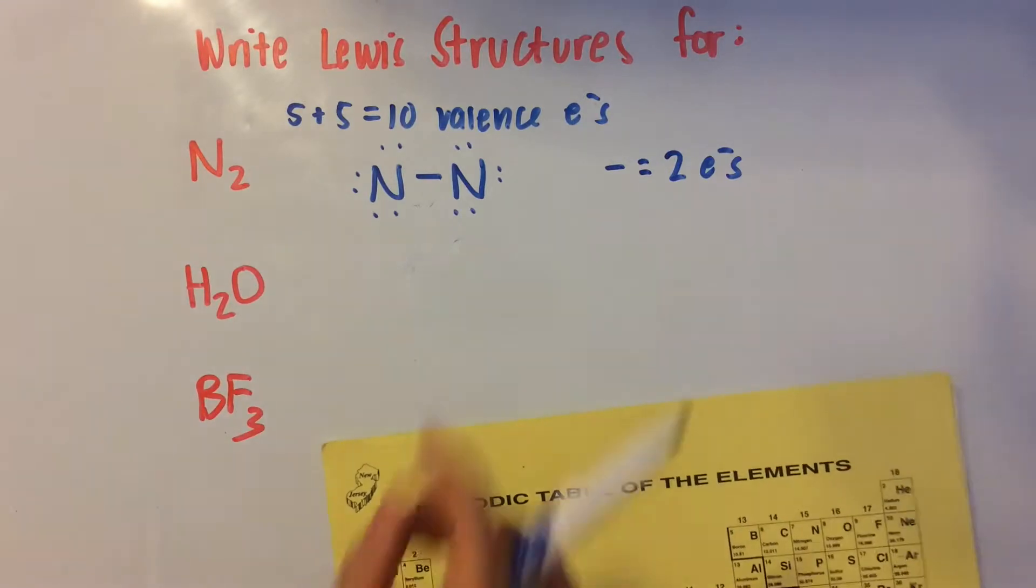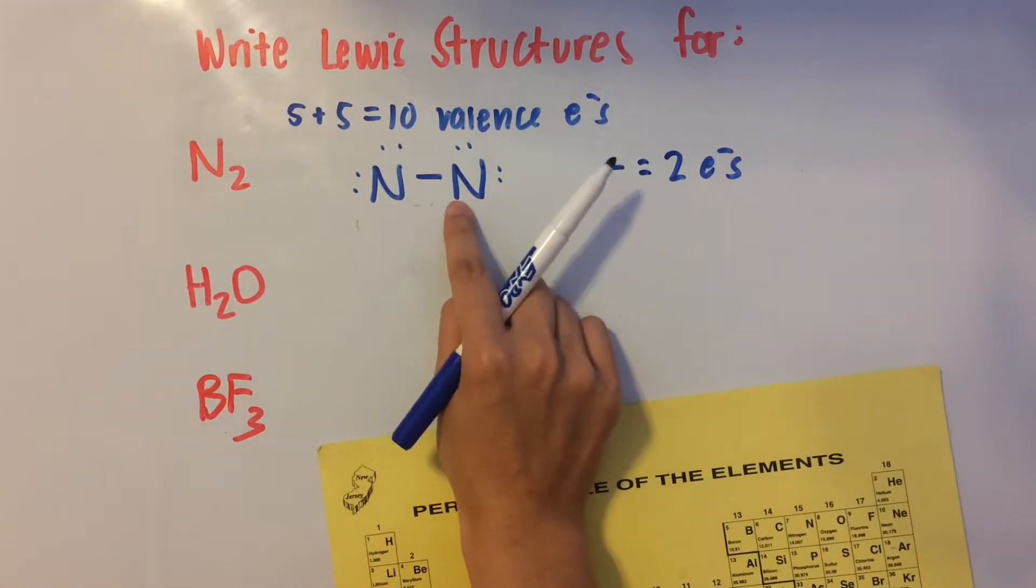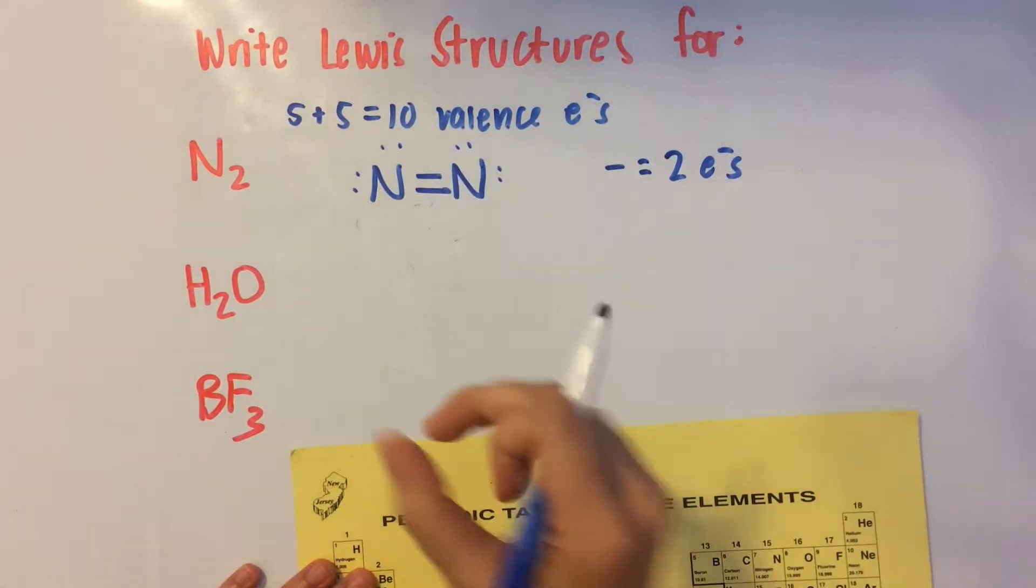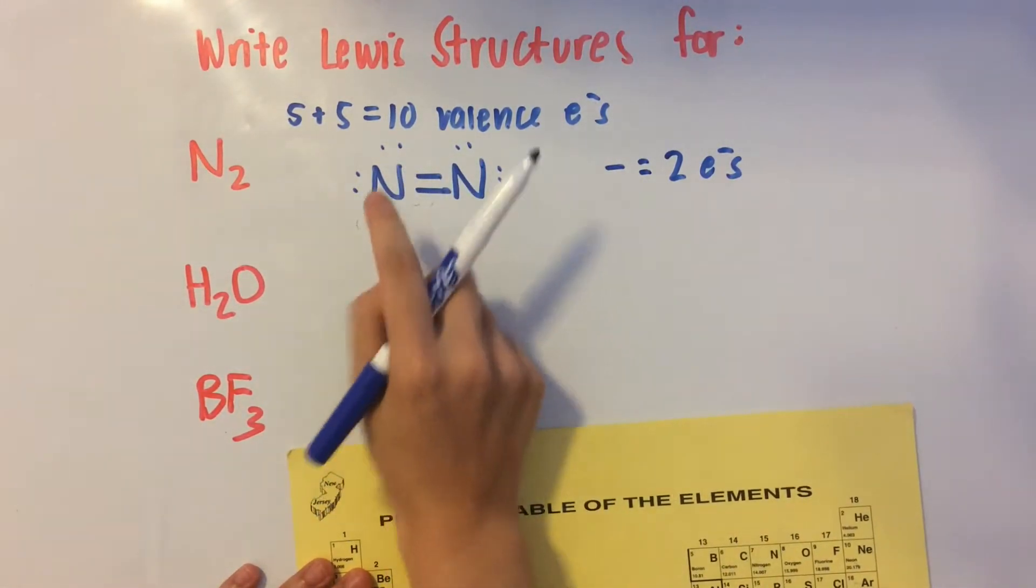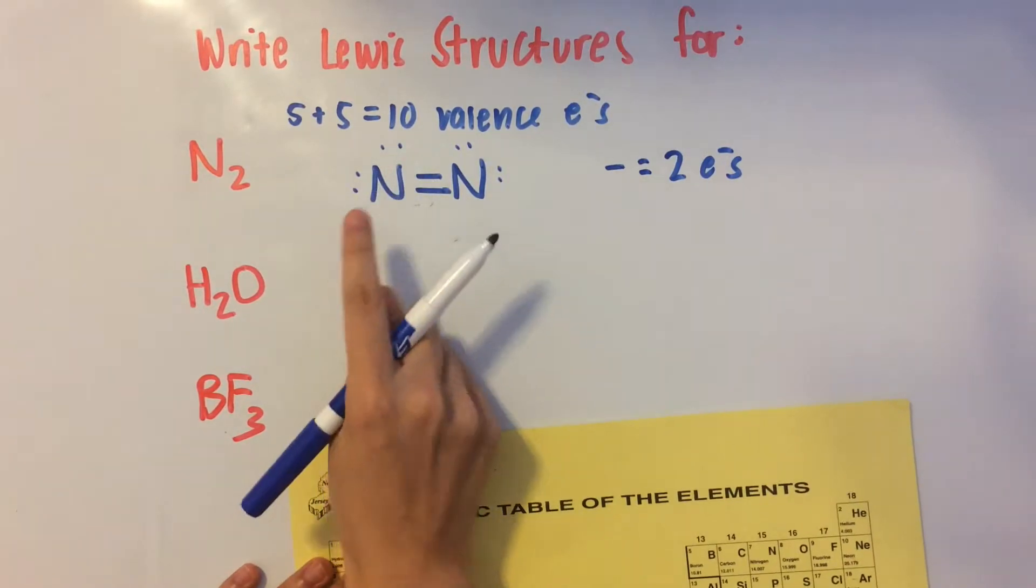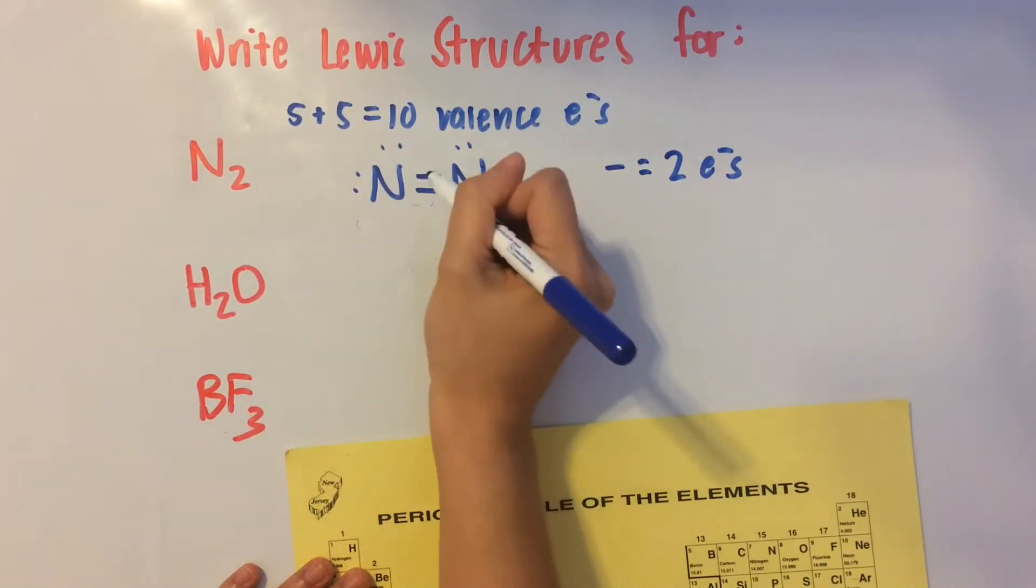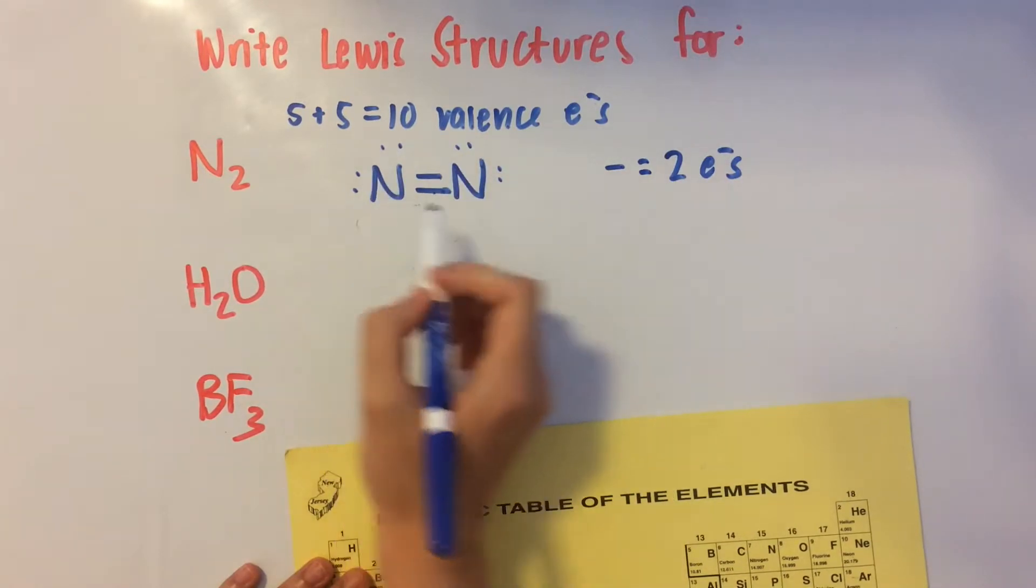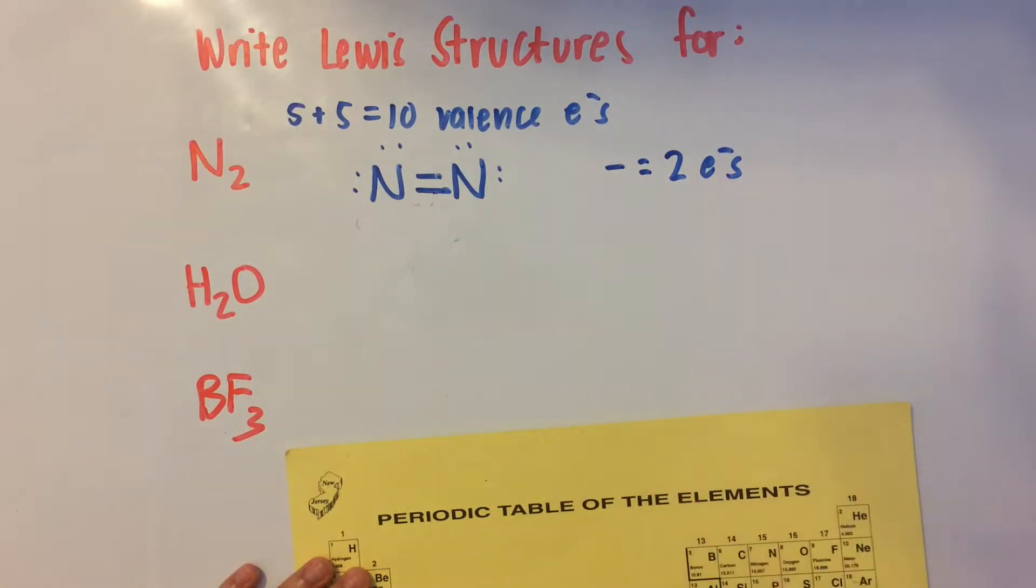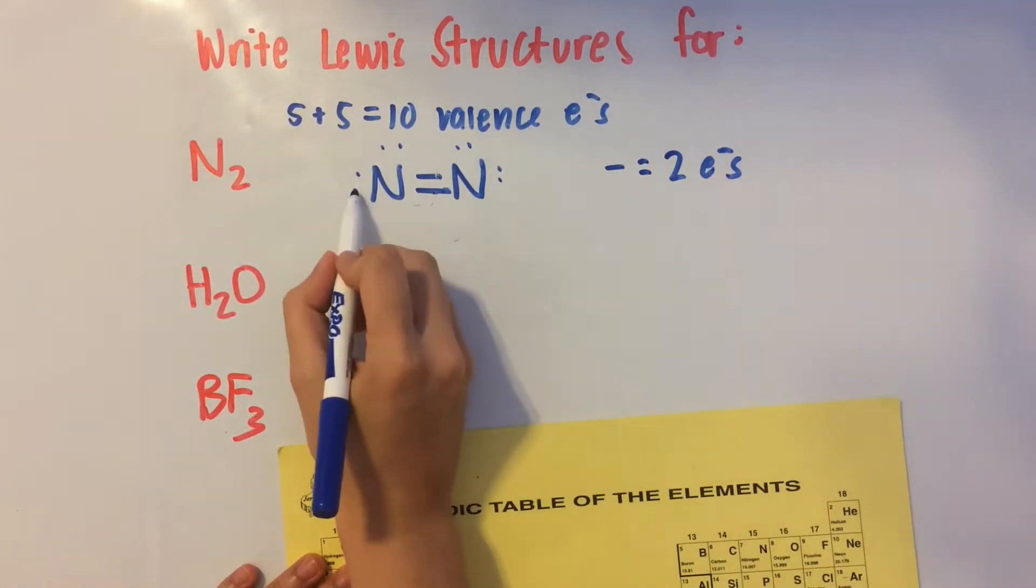So instead, we can take out a pair of electrons and make them share it. And that's still going to count as an octet because remember we had four sides and we had two electrons on each side. Well, we have 1, 2, 3, and 4 for this element. 1, 2, 3, and 4 for this element. So we're still good.